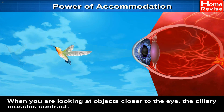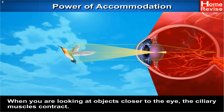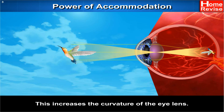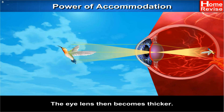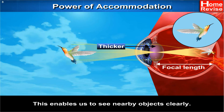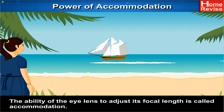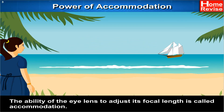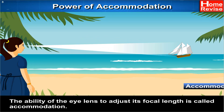When you are looking at objects closer to the eye, the ciliary muscles contract. This increases the curvature of the eye lens, and the eye lens then becomes thicker. Consequently, the focal length of the eye lens decreases. This enables us to see nearby objects clearly. The ability of the eye lens to adjust its focal length is called accommodation.